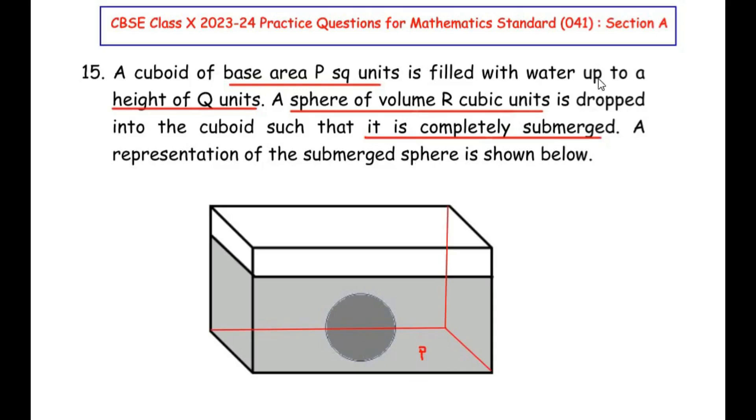It is filled up with water to a height of Q units. Now the shaded region which you see, this is nothing but height of the water and it is given as Q units. So base area is P units and height of the water is Q units.